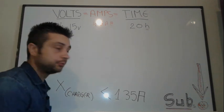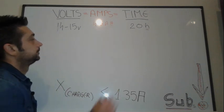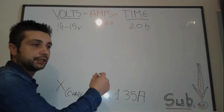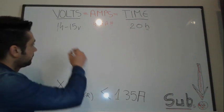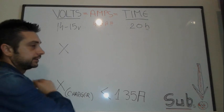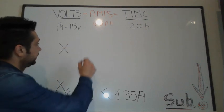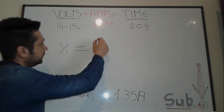Stay tuned, we're gonna write down the formula for calculating the needed current for charging our 12 volt battery. We're gonna note with X the unknown charging current, which is gonna be equal with amps.